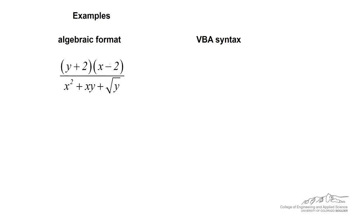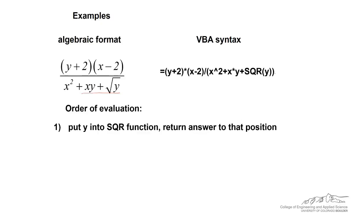If we had y plus 2 quantity times x minus 2 over this denominator, the way you do that in VBA would be you would write it like this. The way that VBA interprets it is it always does functions first, so it calculates the square root, returns an answer to that position, it then starts with parentheses, order of operations.